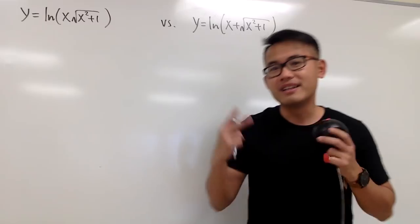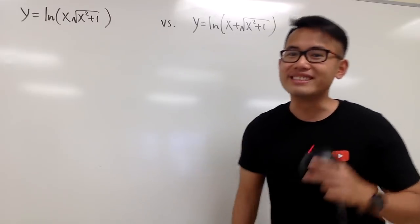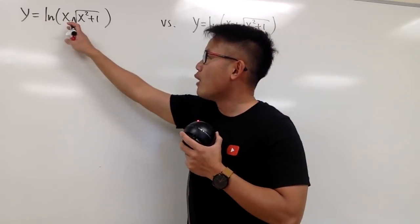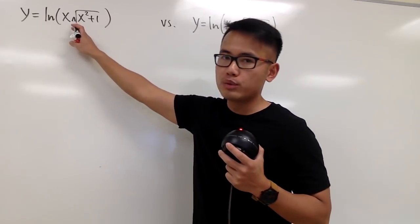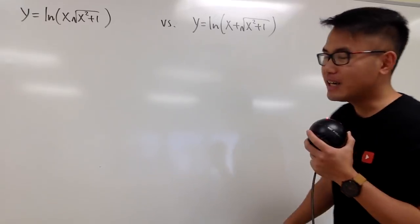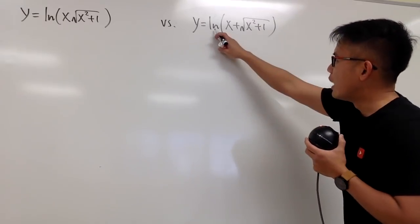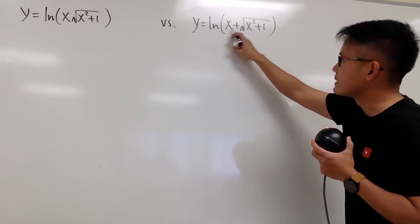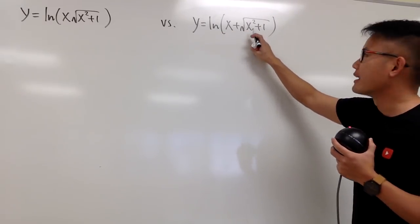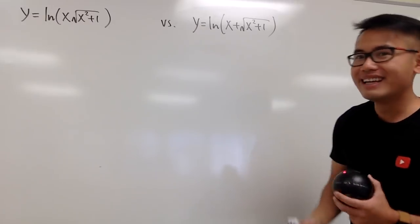Okay, we are going to differentiate these two expressions. The first one is ln of x times square root of x squared plus 1, and the second one is ln of x plus square root of x squared plus 1.